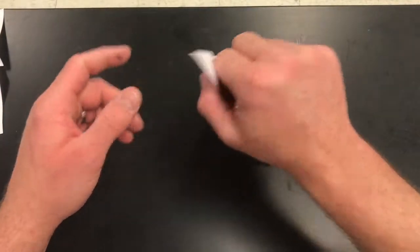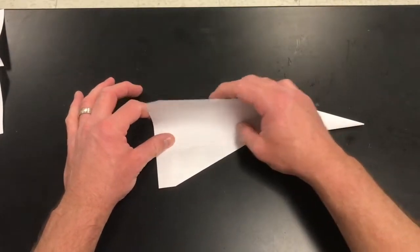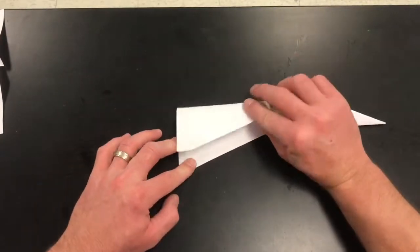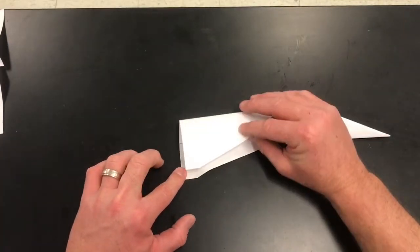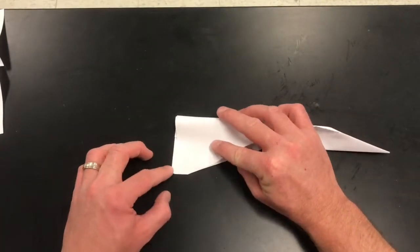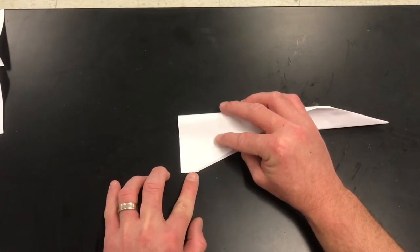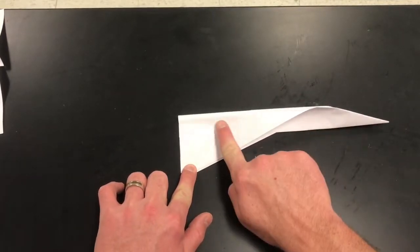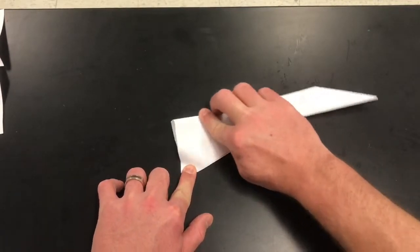Then I'm going to flip it over. Do the same thing on the other side. Take this wing. And again, I want this to be a straight line. Not like that, not like that. But one right on top of the other. I like to line the corners up. That's probably said a bunch of times. And then I'm just going to go with the other hand. I'm going to crease it down. Hold it down.